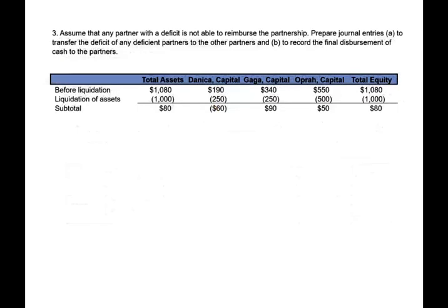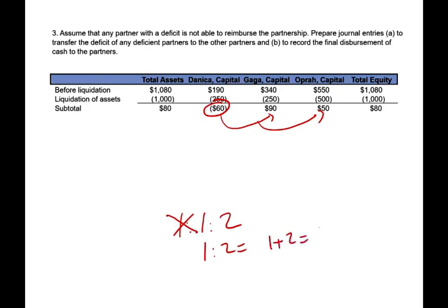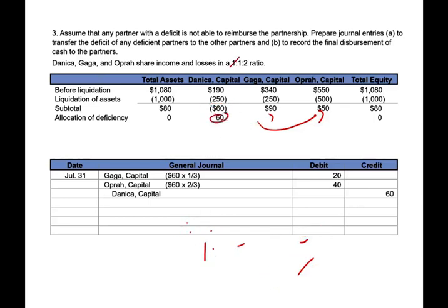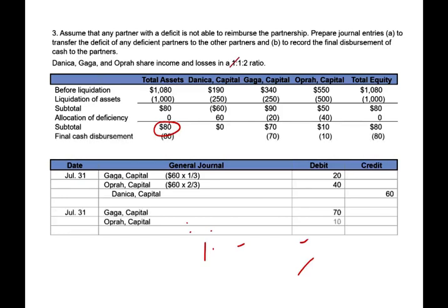In the third scenario, we assume D cannot pay the $60 deficit. This $60 will be absorbed by the other two partners. The original ratio is 1 to 1 to 2; removing D leaves 1 to 2, so the total is 3 — meaning it's distributed one-third to G and two-thirds to O, which is $20 and $40 respectively. D's balance goes to zero, and G and O also have their balances reduced because they absorbed D's uncovered loss. We still have $80 in cash, which is distributed to the remaining partners by debiting their accounts and crediting cash.